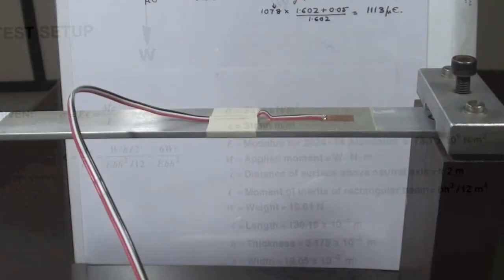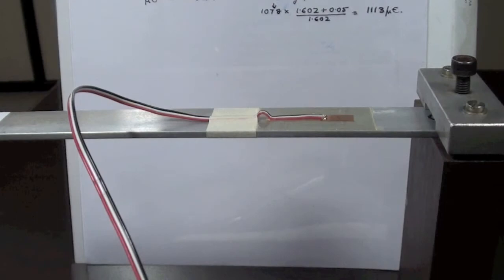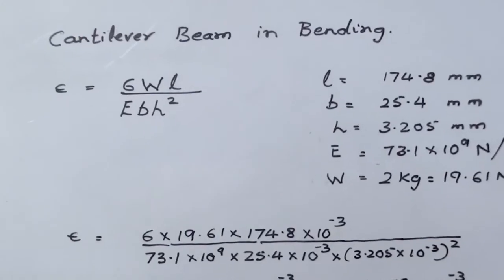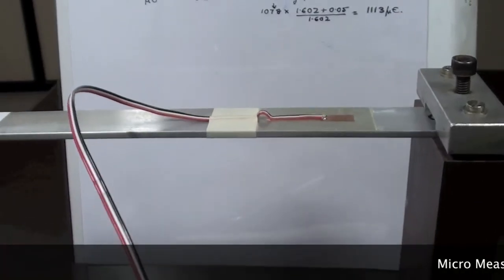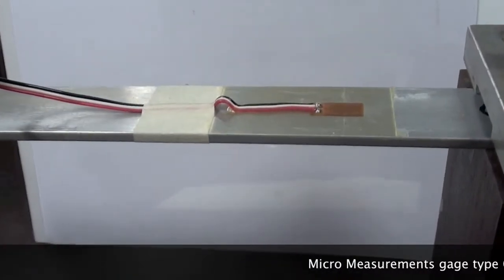Here is a beam of known dimensions for which, as per calculations, the strain should be 1113 microstrain for a load of 2 kilograms.